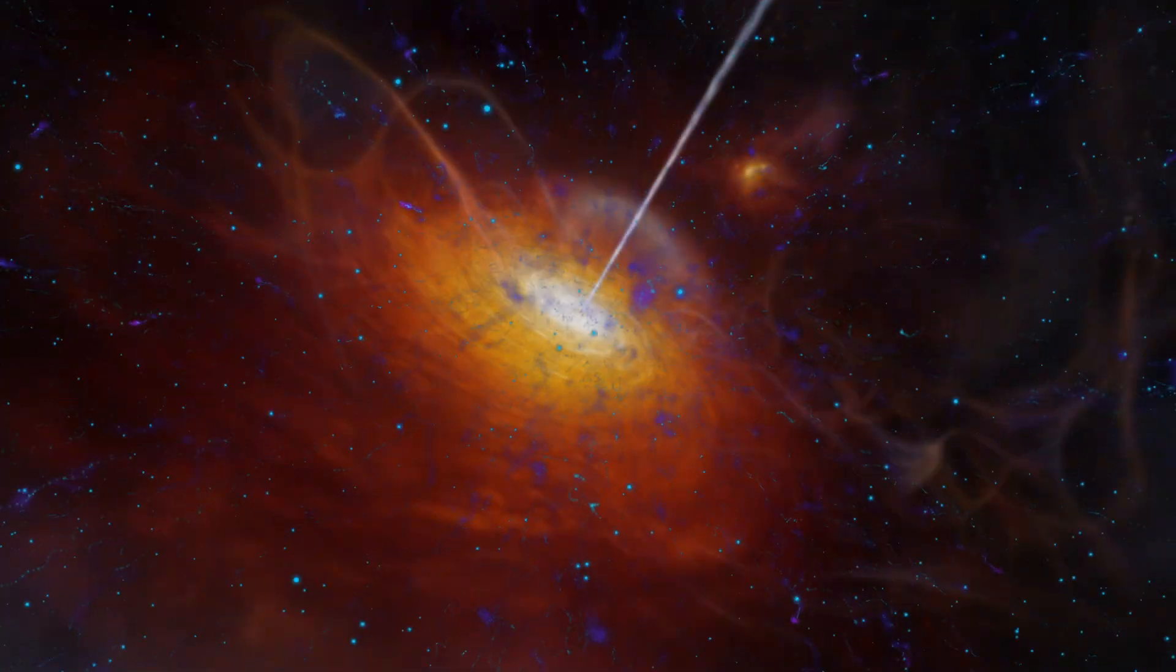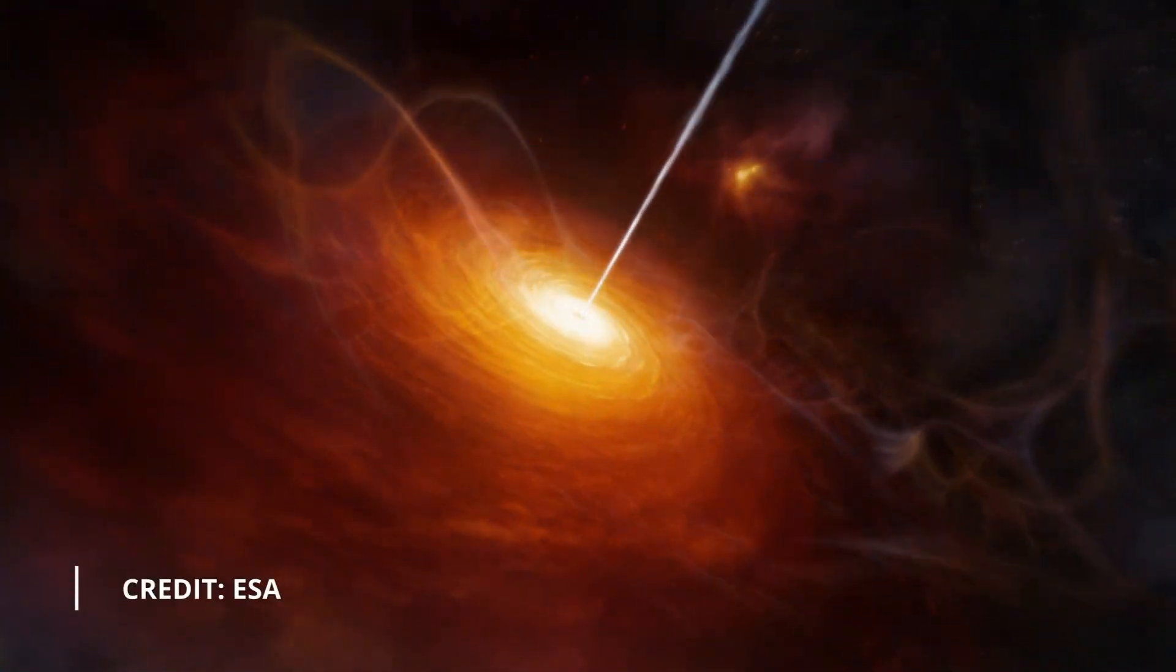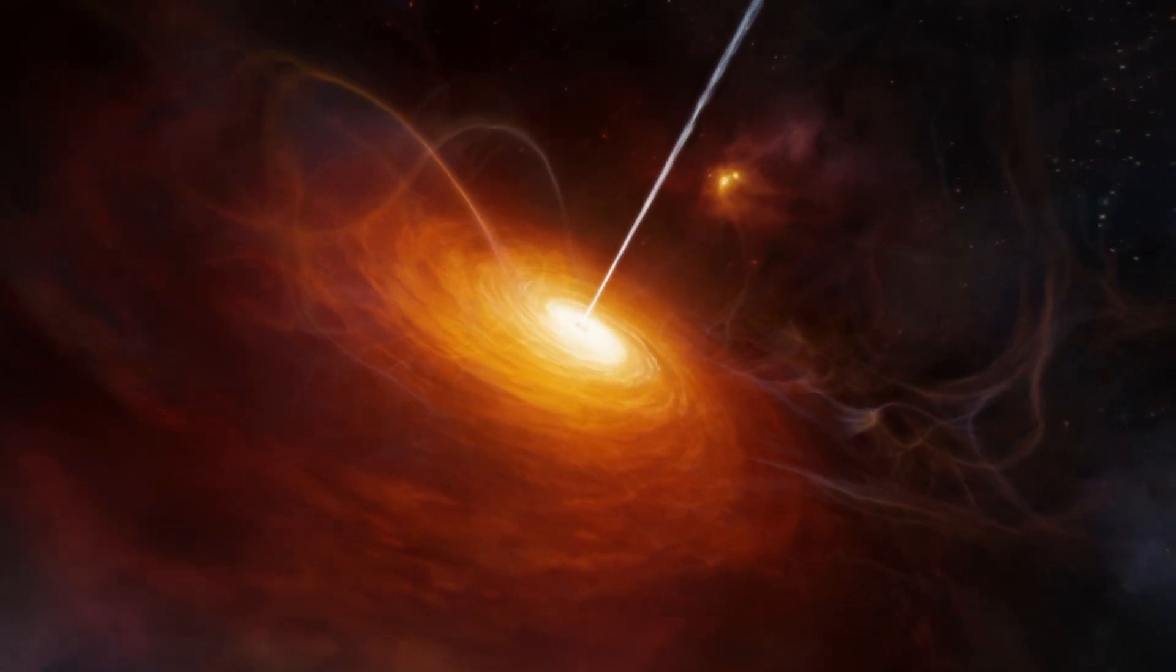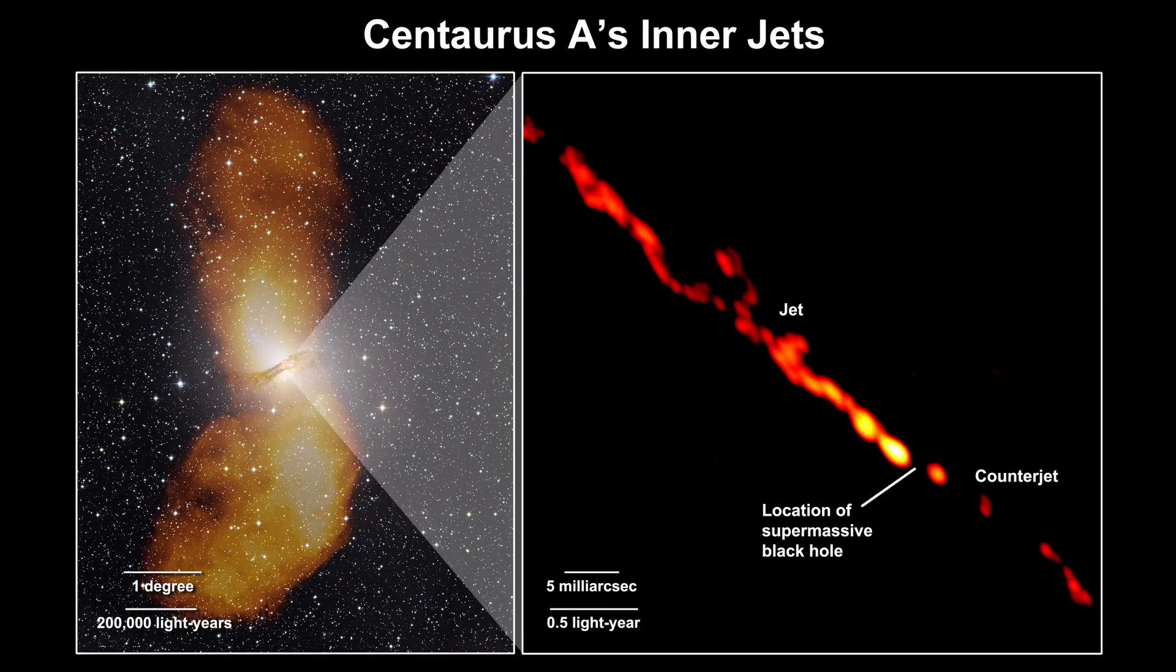At the heart of a galaxy lies the Active Galactic Nucleus or AGN. In active galaxies these produce jets which are mostly observed in radio wavelengths. These types of galaxies are referred to as radio galaxies.